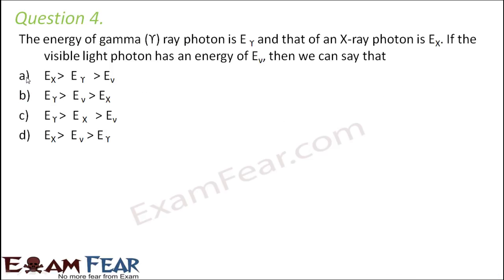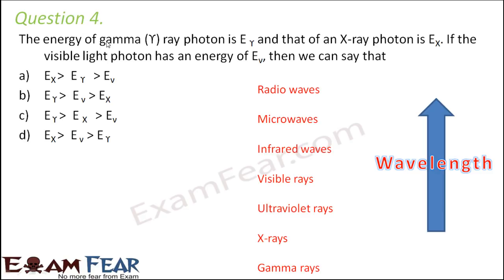Question number 4: The energy of a gamma ray photon is Eγ, and that of an x-ray photon is Ex. If the visible light photon has an energy of Ev, then we can say that — we need to compare the energy of gamma ray, x-ray, and visible light photons. All of these are part of the electromagnetic spectrum. Looking at the electromagnetic spectrum, the rays we are concerned about are gamma ray, x-ray, and visible light.